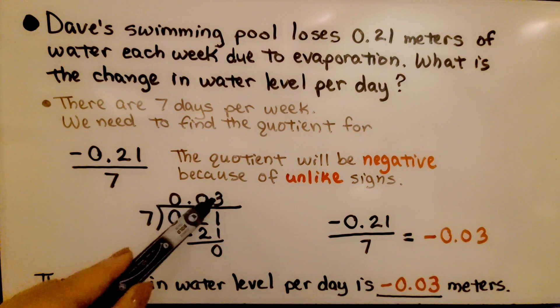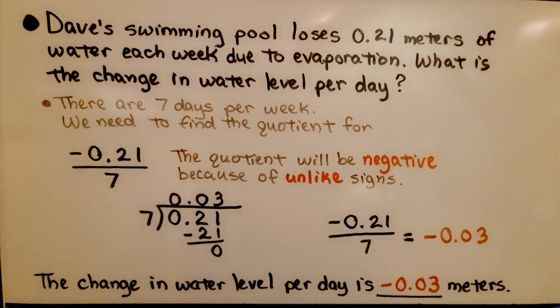We do the division and get 0.03. It's negative 0.03 because of the unlike signs. So the change in water level per day is negative 0.03 meters.